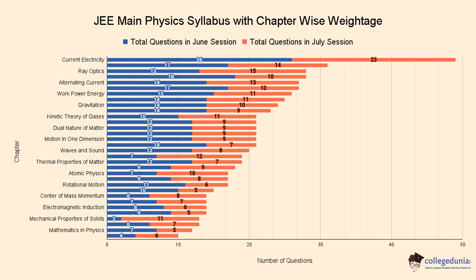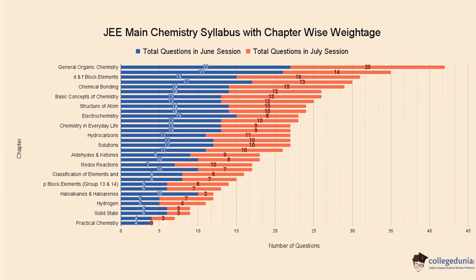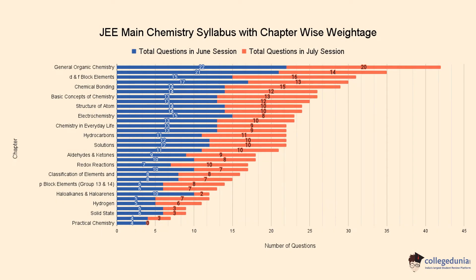Here you can see JEE Main Chemistry chapter-wise weightage for the year 2022. Among these chapters, General Organic Chemistry has the highest number of questions asked in both sessions. Similarly, chapters like D and F Block Elements, Chemical Bonding, and Basic Concepts of Chemistry have more weightage than other Chemistry chapters.